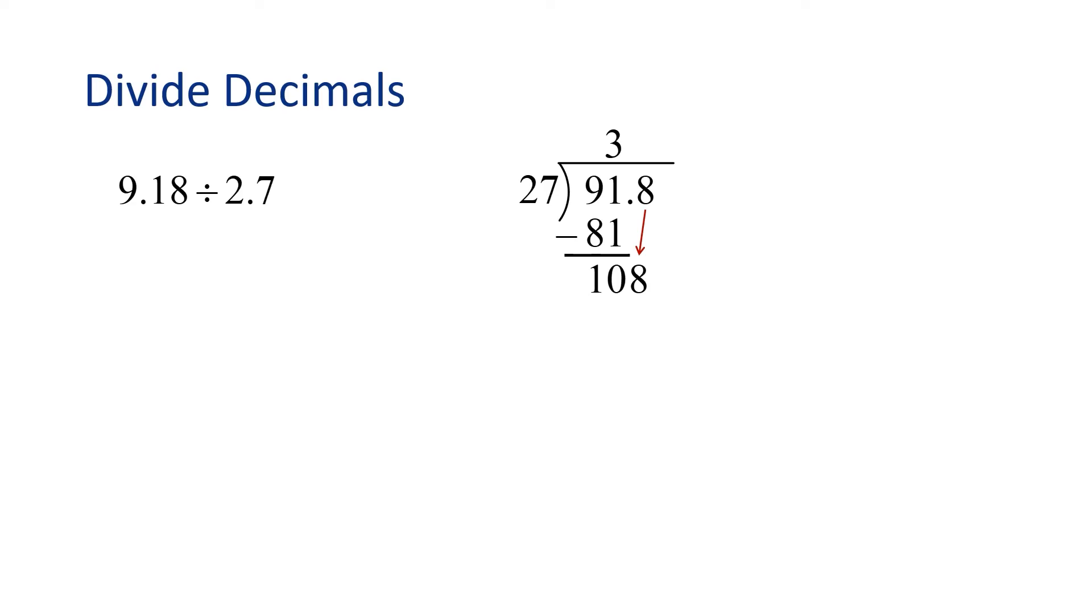Well, we know that 3 times 27 was 81, so let's try one more. Let's try 4. 27 times 4 is 108.